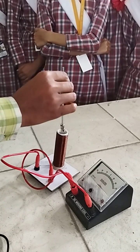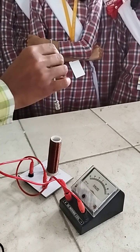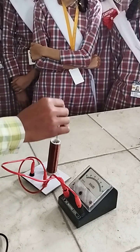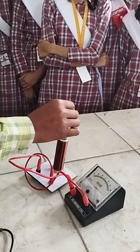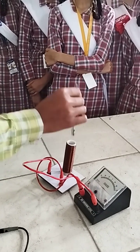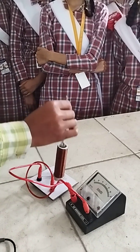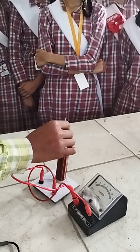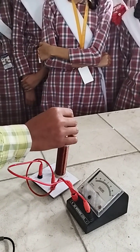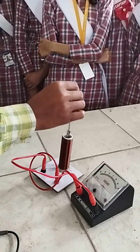And this tells you that there is some current flowing. And what is the cause for this current? Have you connected some battery here? No. So what is the source of your current? The motion of the magnet. And when you move the magnet, what happens exactly? You change the magnetic flux.